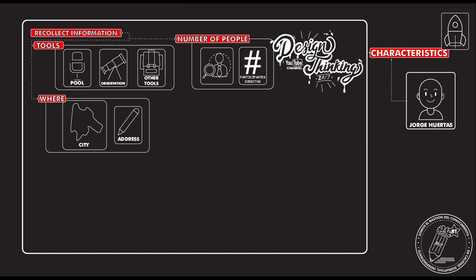After that, it's very important that you specify where the information was taken — which city, which neighborhood, which street. And it's very important that you make a small drawing of a map picturing the area where you recollect the information. If you did it online, you also have to specify how much time and everything — you have to specify where.